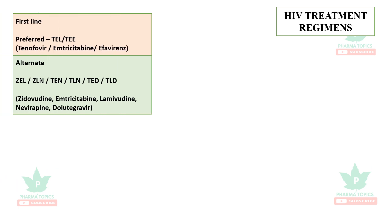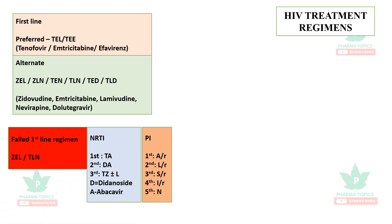For first-line drugs, remember the mnemonic 'TLE' — tenofovir, emtricitabine, and efavirenz. Alternate regimens include triple combinations such as zidovudine plus emtricitabine plus lamivudine, nevirapine, and dolutegravir. If first-line drugs fail, other triple drug regimens are used.